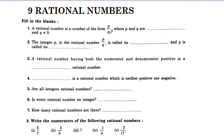Integers means negative numbers, 0, and positive integers. So p and q are integers.